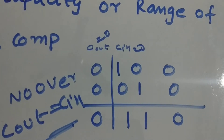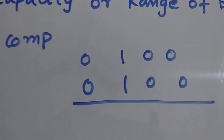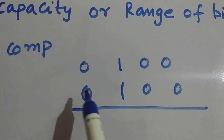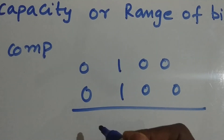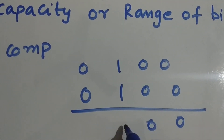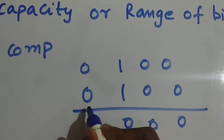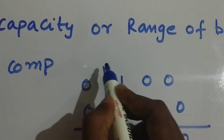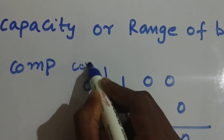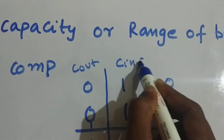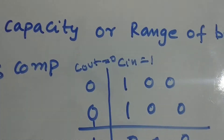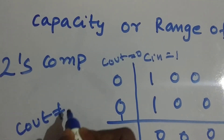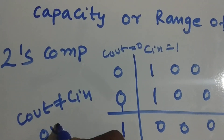Now one more example: 0100 plus 0100 in two's complement. Adding them gives 1000 with a carry of one into the result. Drawing the line, C_in equals one and C_out equals zero. They are not equal — C_out is not equal to C_in — so this is an overflow condition.